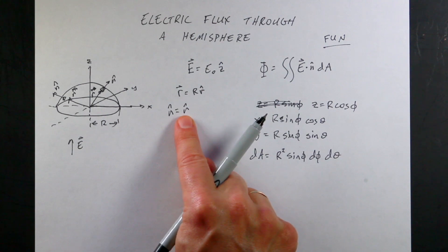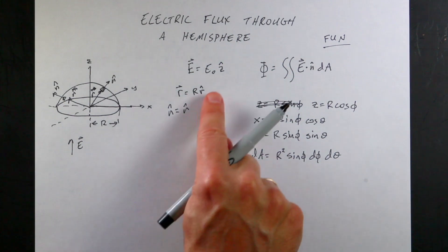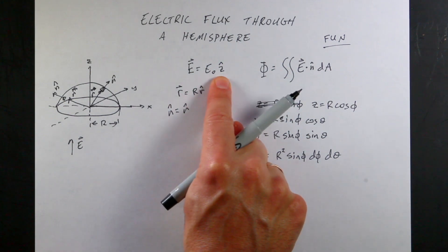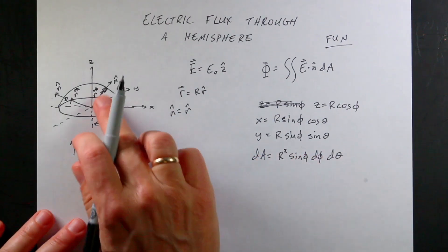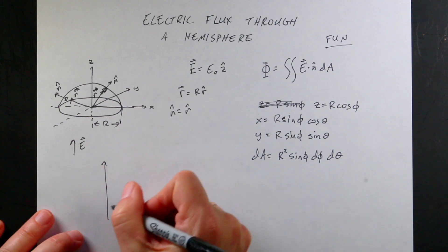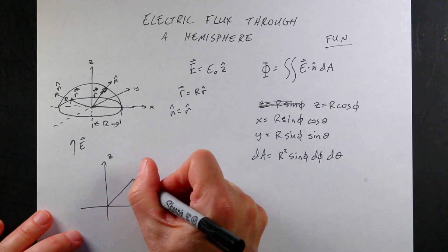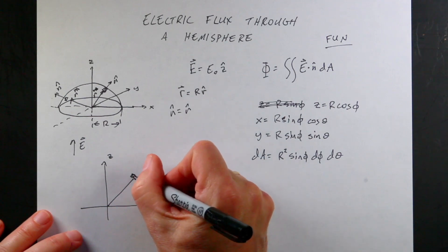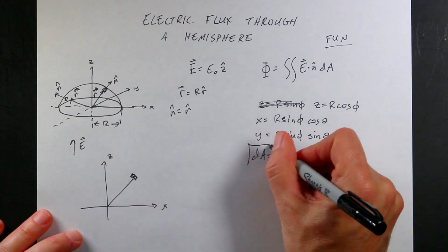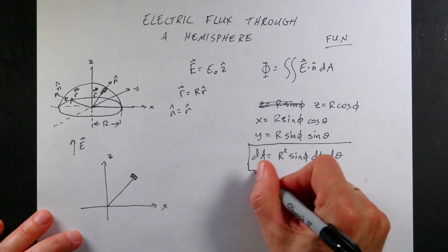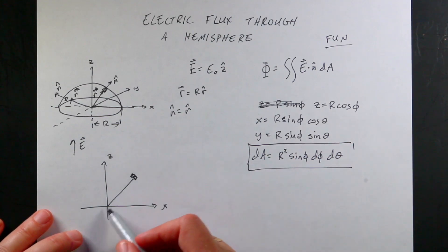But I can't take the dot product between the Cartesian unit vector z-hat and the spherical unit vector r-hat because they have to be in the same coordinate system in order to do a dot product. So here's what we're going to do: we need to get this in spherical coordinates — that's the hard part, really the only hard part. Let's look at this from the side. This is the z-axis and this is the x-axis. And here is my piece of surface. I know the area of that piece in spherical coordinates; the area element is R-squared sine φ dφ dθ, where we use capital R because it's a constant distance from the origin.